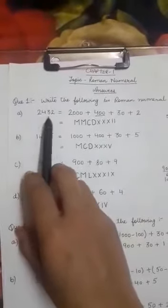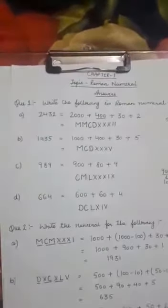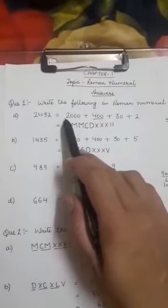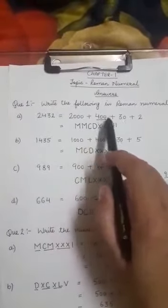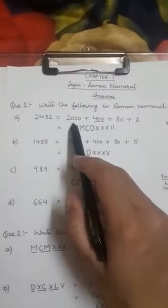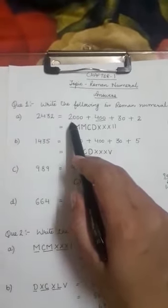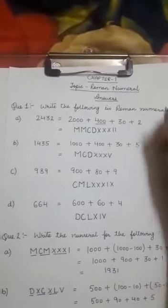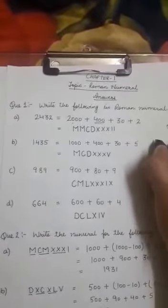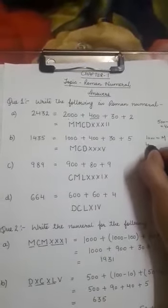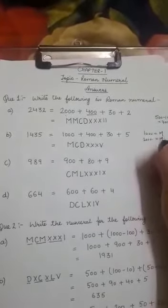First part 2432. So first I will write the expanded form of this number that is 2000 plus 400 plus 30 plus 2. Now one by one I will write the Roman numerals for it. For 2000, for 1000 I have M. So for 2000 I have M, M.